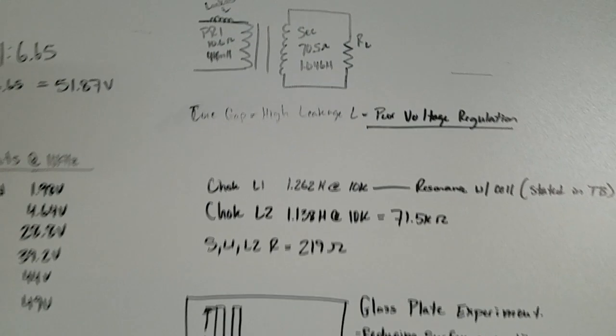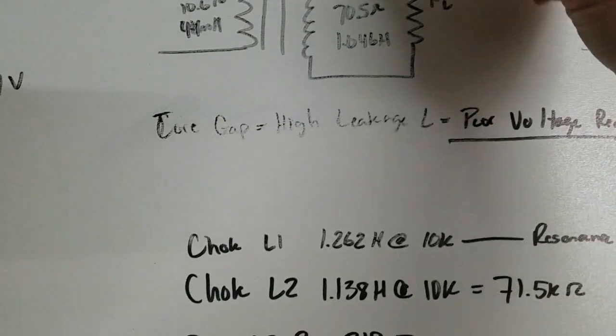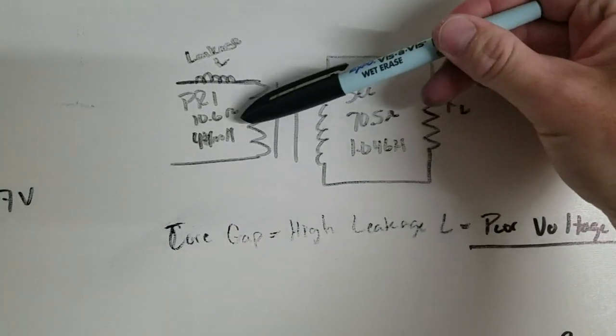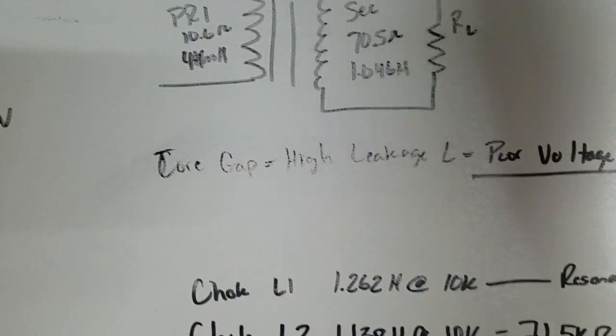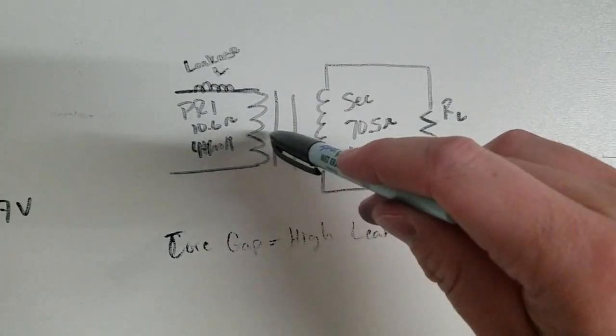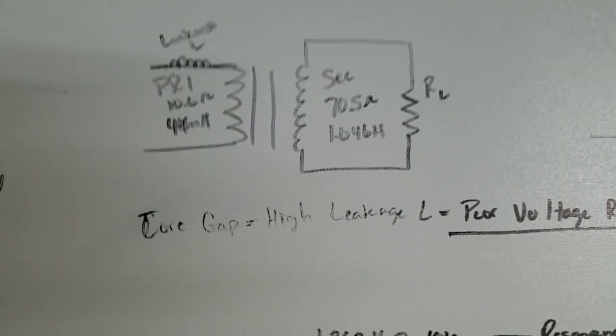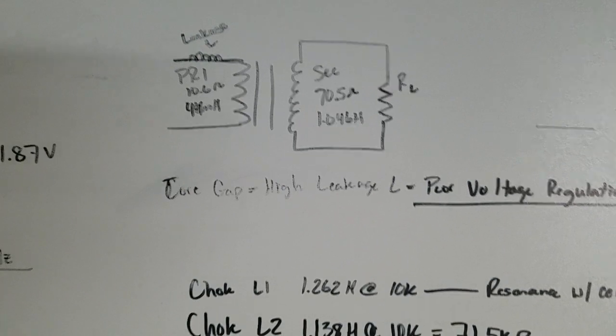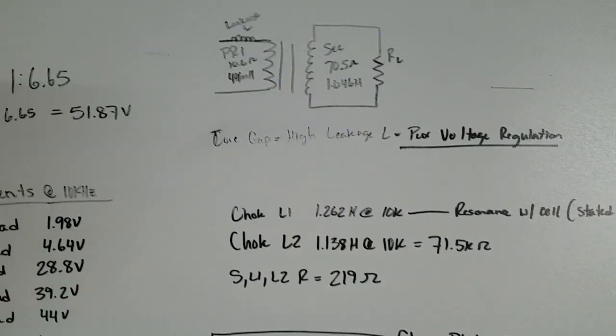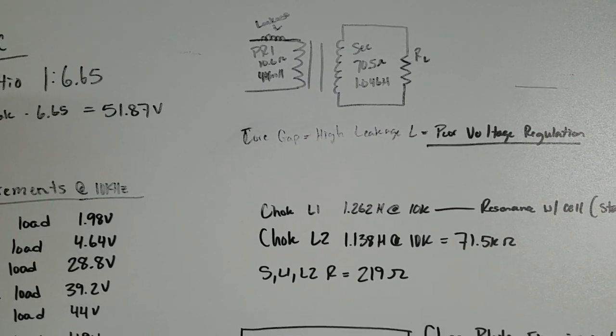If you look at Stan's VIC design, in order to get the right values of inductance and resistance in any core, the only way to do it is by gapping the core. Stan had to do the same thing. Initially I thought that was a design flaw, but then after doing more research I realized it was designed that way on purpose.